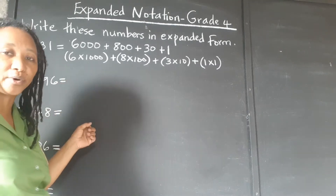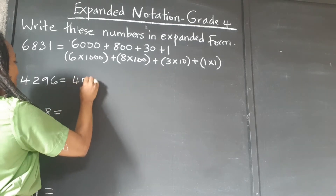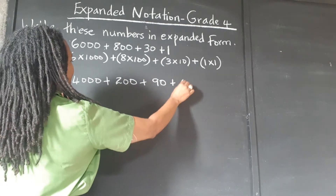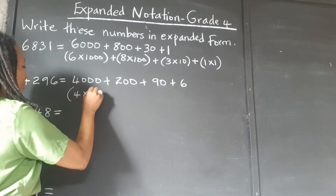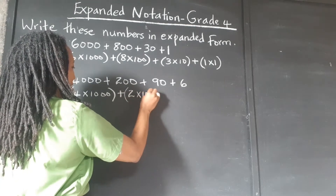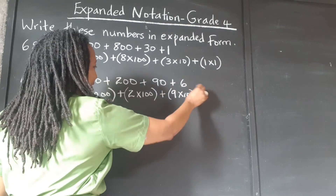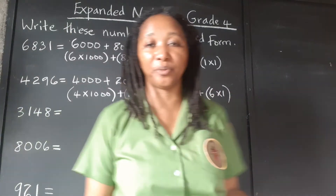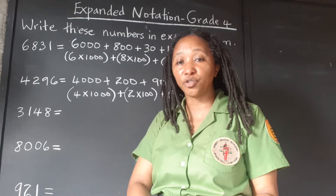So let's just do these numbers. This is 4,296. So that's 4,000 plus 200 plus 90 plus 6. And we can write the 4,000 as 4 times 1,000, plus the 200 as 2 times 100, the 90 as 9 times 10, and the 6 as 6 times 1.